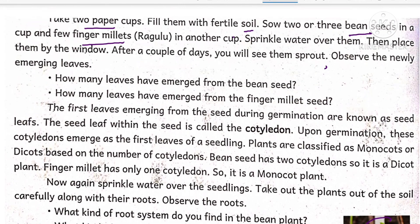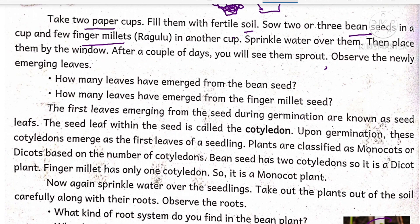Generally, all the grains, when they sprout, have only a single leaf. But plants like beans, black gram, and green gram all have two seed leaves.